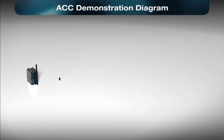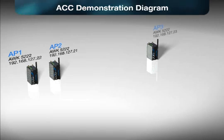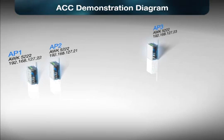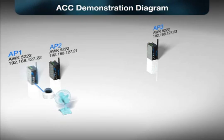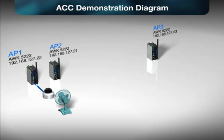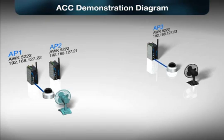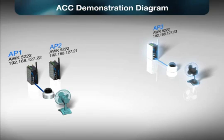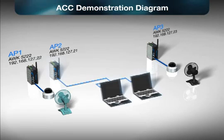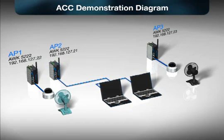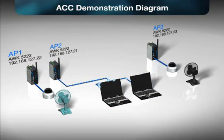In this demonstration, we will use three AWK5222 devices acting as access points. The leftmost AWK5222 is access point 1 and is connected to a webcam pointing at a green fan. The rightmost AWK5222 is access point 3 and is connected to a webcam pointing at a black fan. The final AWK5222 access point 2 is connected to two laptops. Each laptop displays the link status of one of the two webcams.